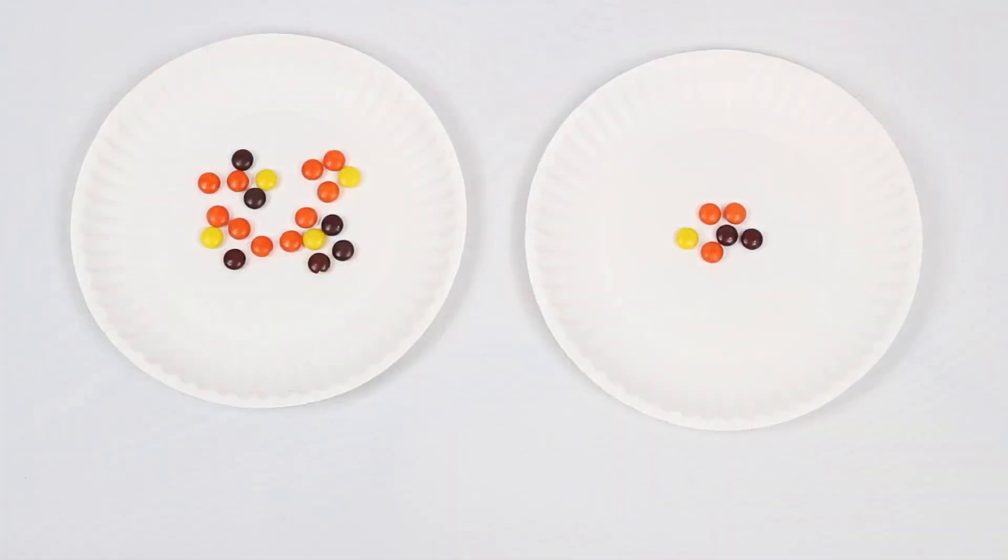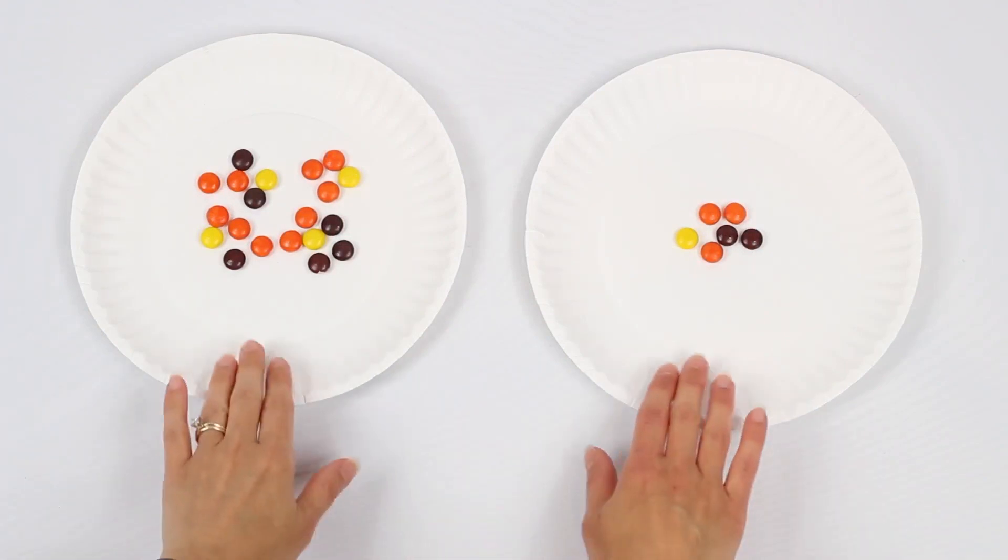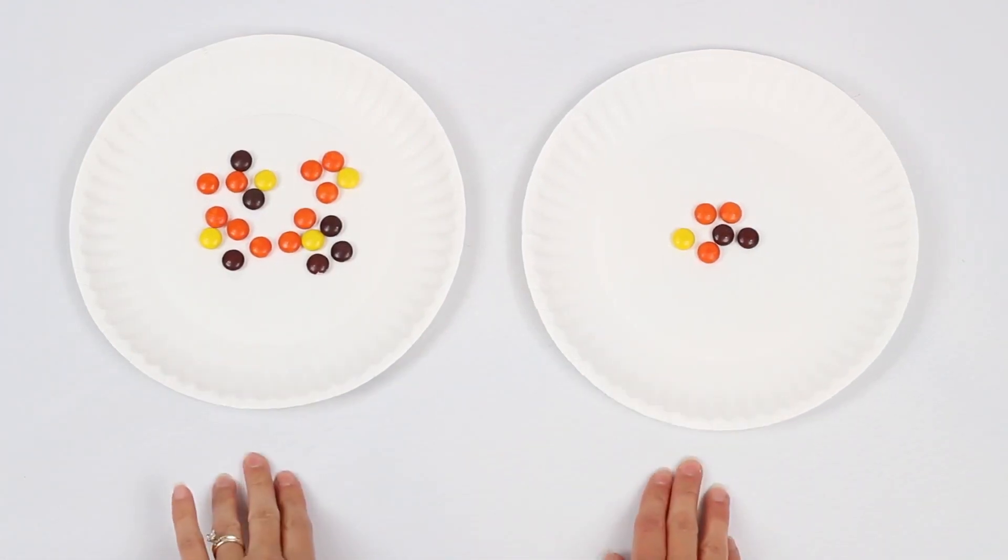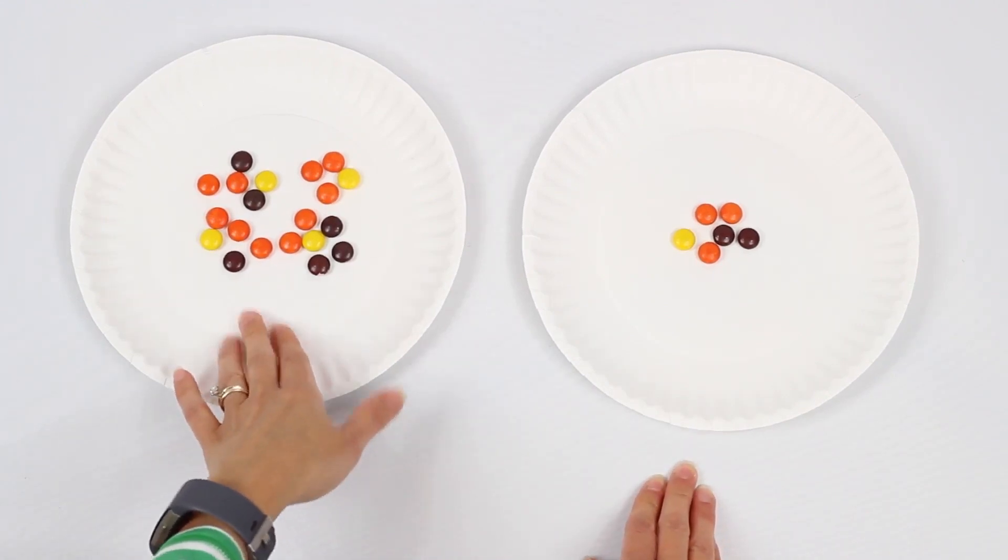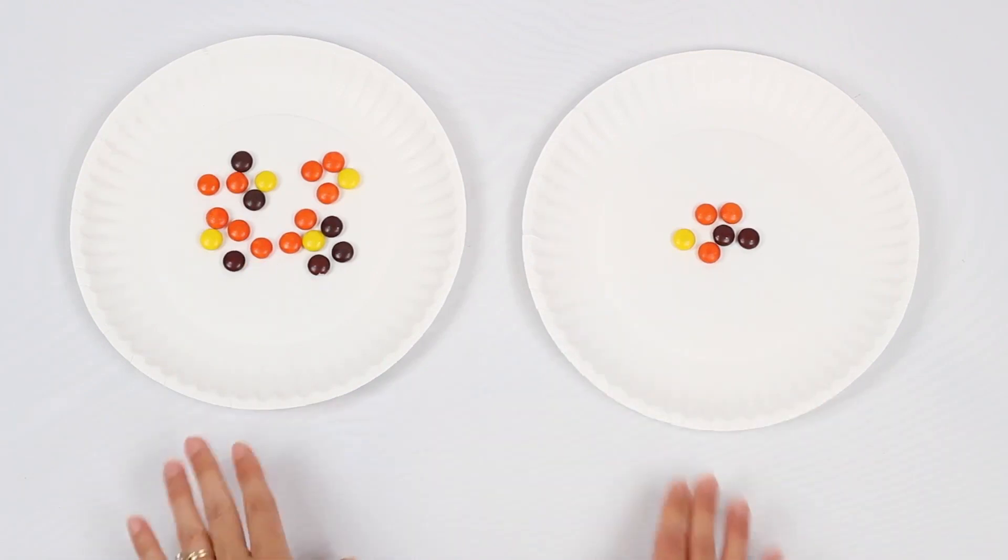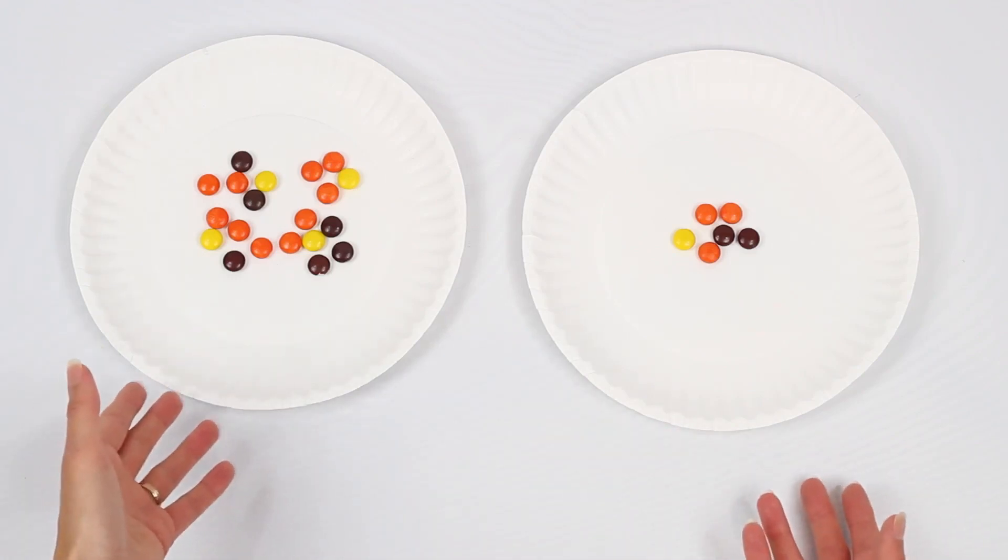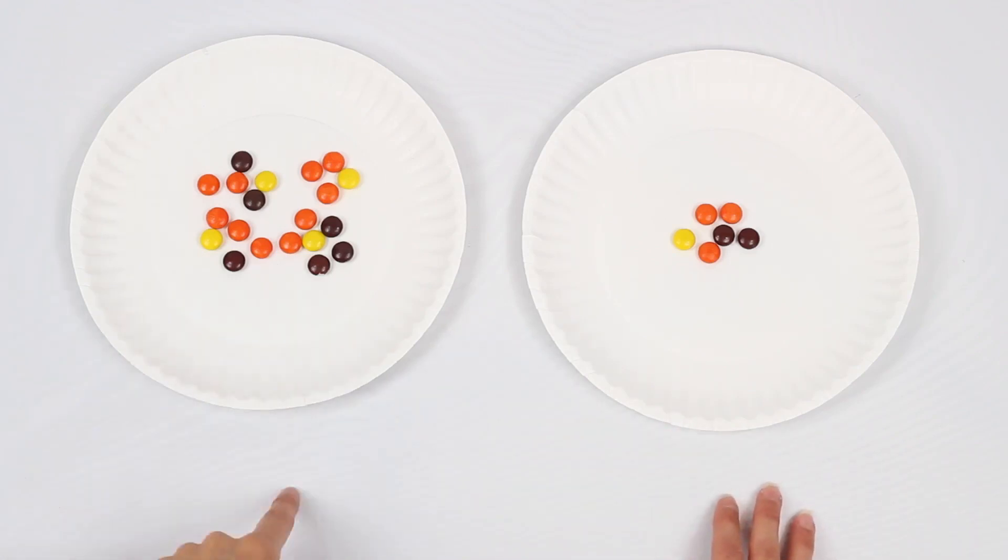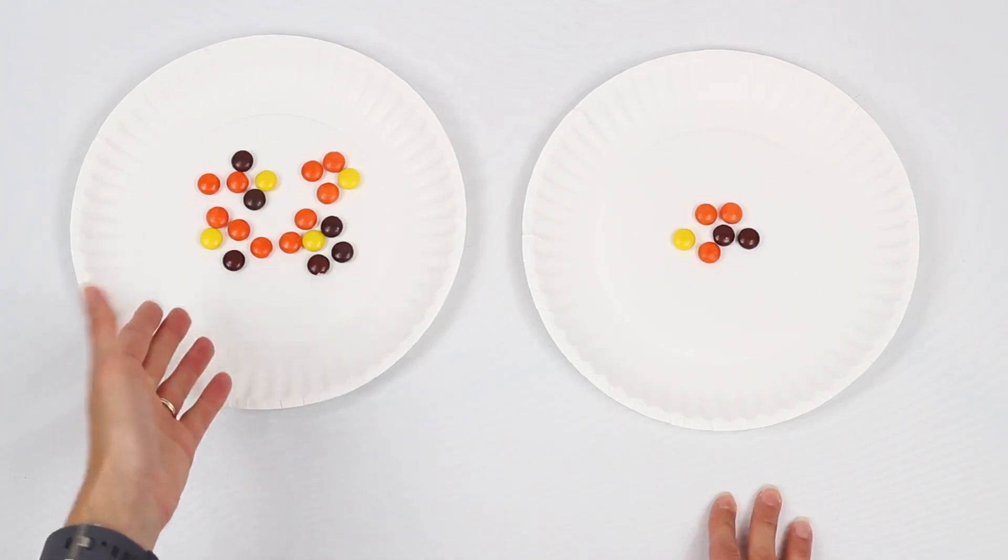A fun way to teach the concept of comparing numbers to our students is by using candy. Take two paper plates and put small candy pieces on each plate. Just make sure that the plate on the left has noticeably more candy than the plate on the right. Then tell your students, hey, I'm going to give you the candy off one of these two plates. Which one do you want and why? And I bet they're going to say they want the candy from the plate on the left, obviously because it has the most candy.